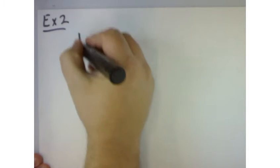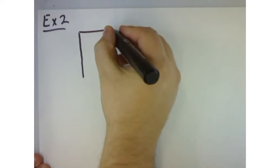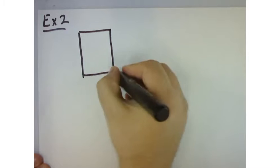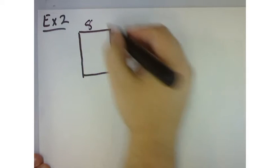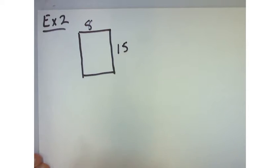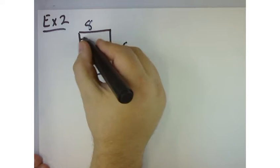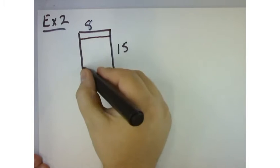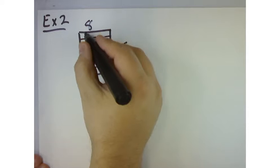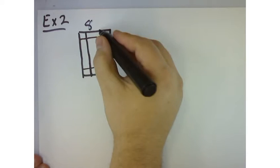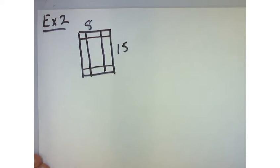So let's write down some information here. For example number two, what they're saying is they have a cardboard sheet, a sheet of cardboard. And it's 8 inches by 15 inches. And they're not sure how much they're going to cut, but what they're saying is the height of the box is x units.